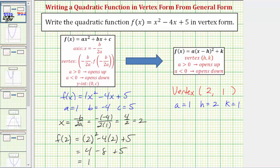which means in vertex form we'd have the equation f of x equals one times the quantity x minus two squared plus one.